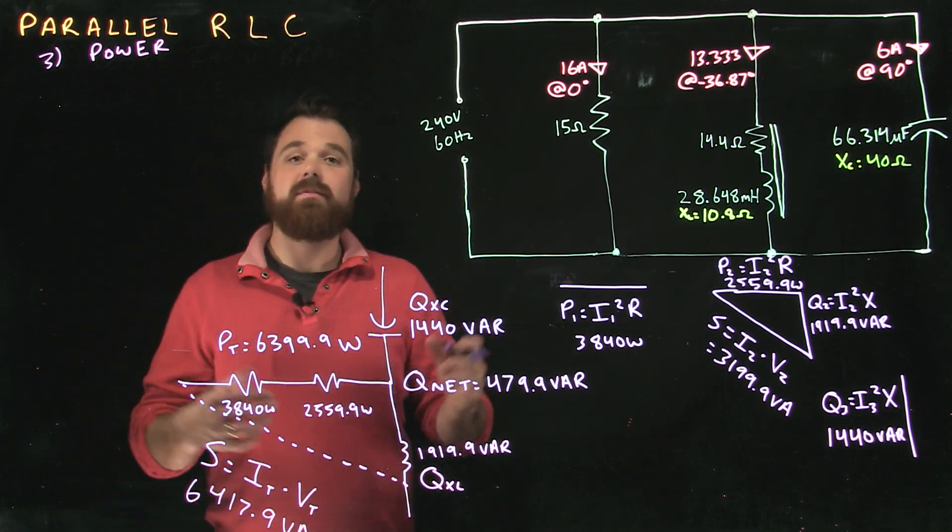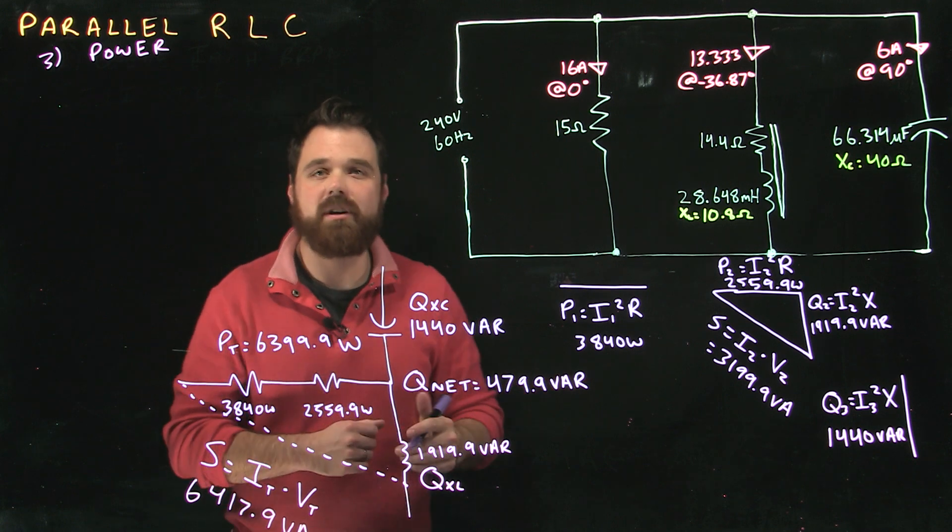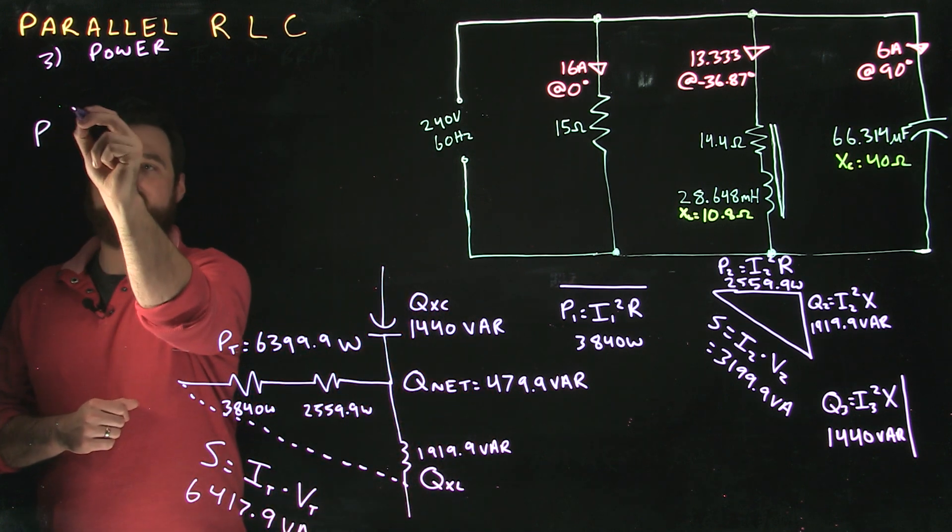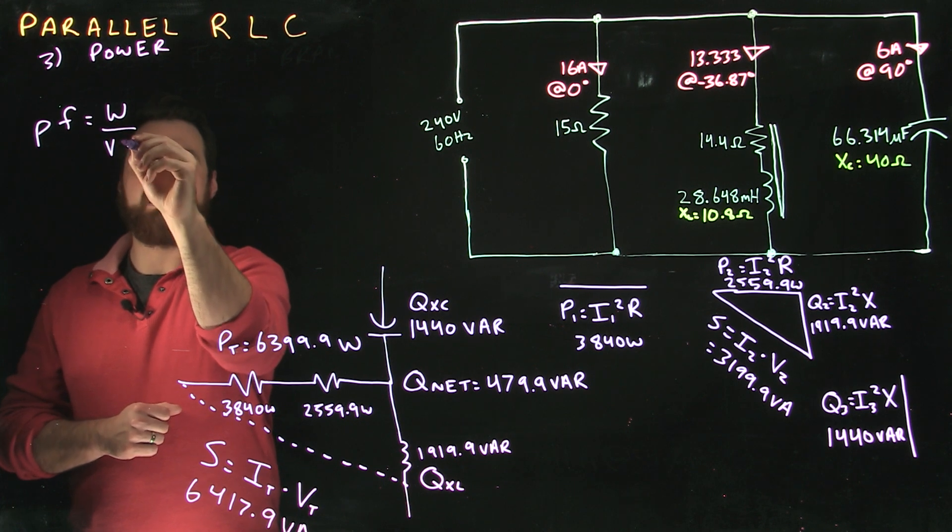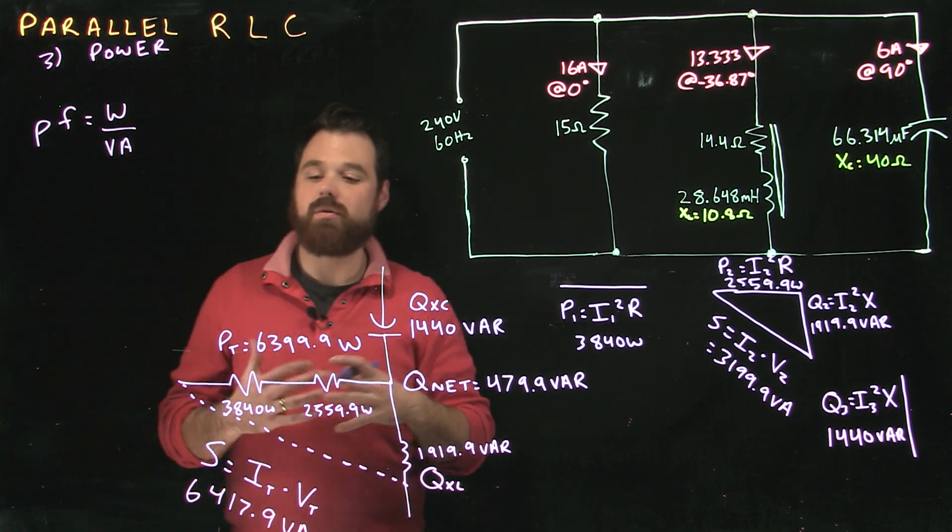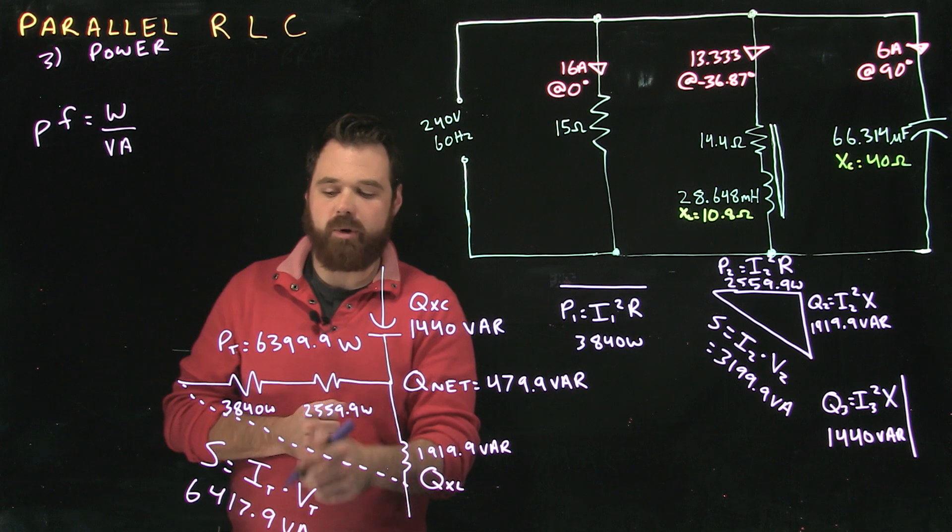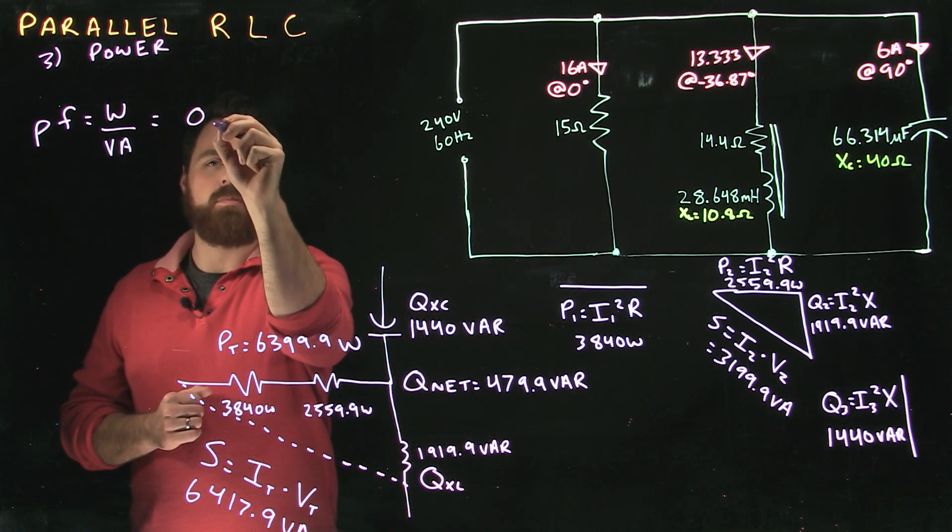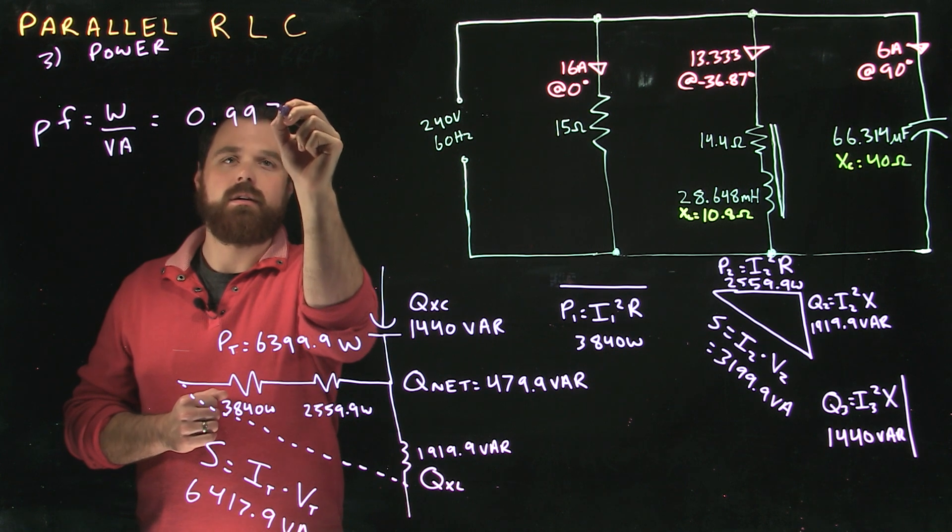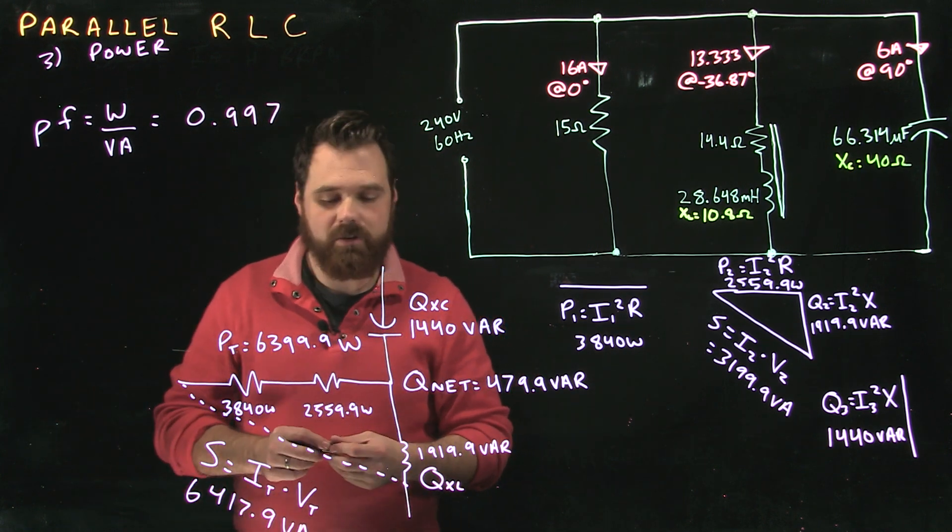Perfect. Now the very last step with all of these circuits is my power factor. It's going to be Watts divided by VA. So I go 6399.9 divided by my VA, and I get a power factor of 0.997, which is actually a very good power factor.